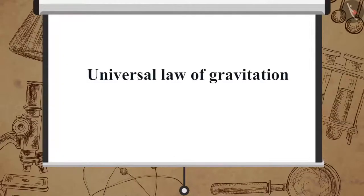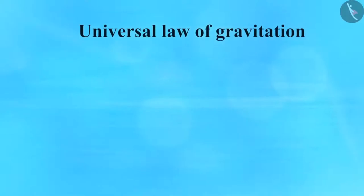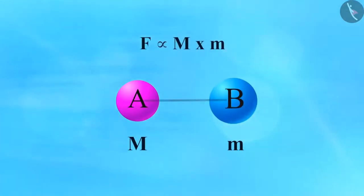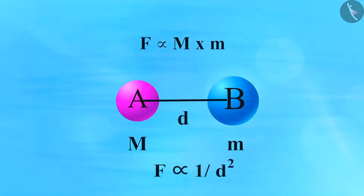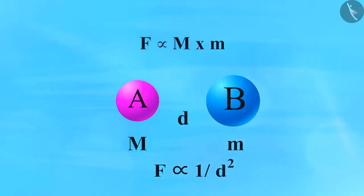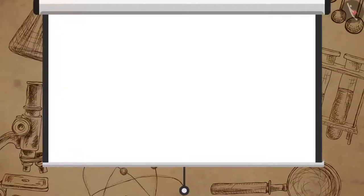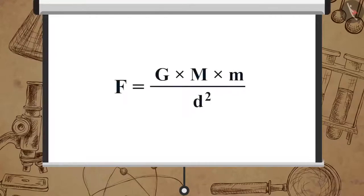Now let us understand what exactly is the universal law of gravitation. The universal law of gravitation states that the force between two objects in the universe is directly proportional to the product of their masses and inversely proportional to the square of the distance between them. The force is directed along the line joining the centers of the two objects. Mathematically, it is written as F = G × M × M / D².